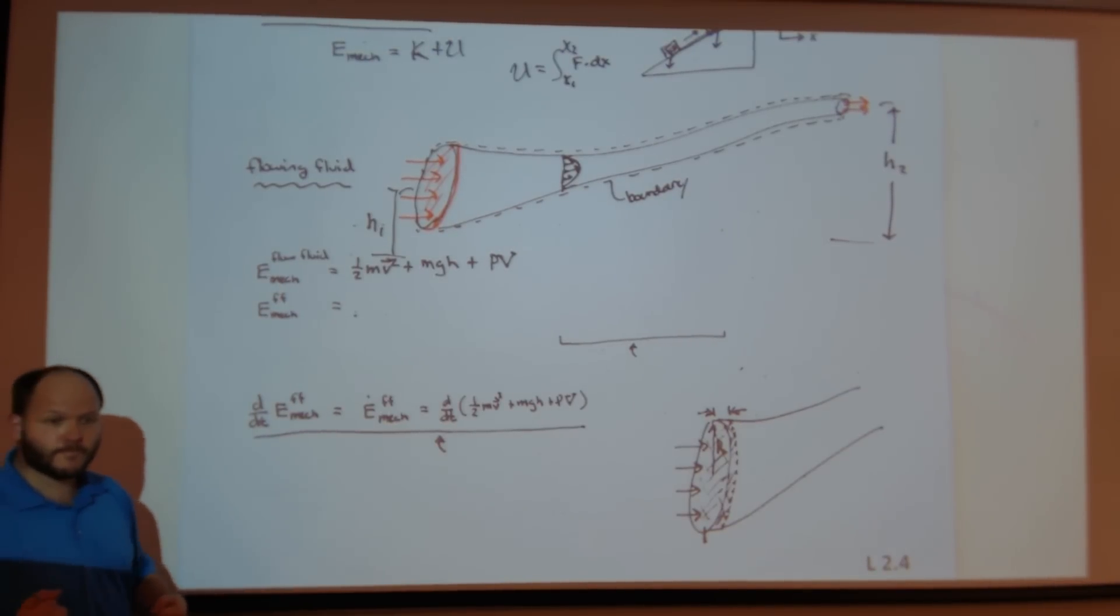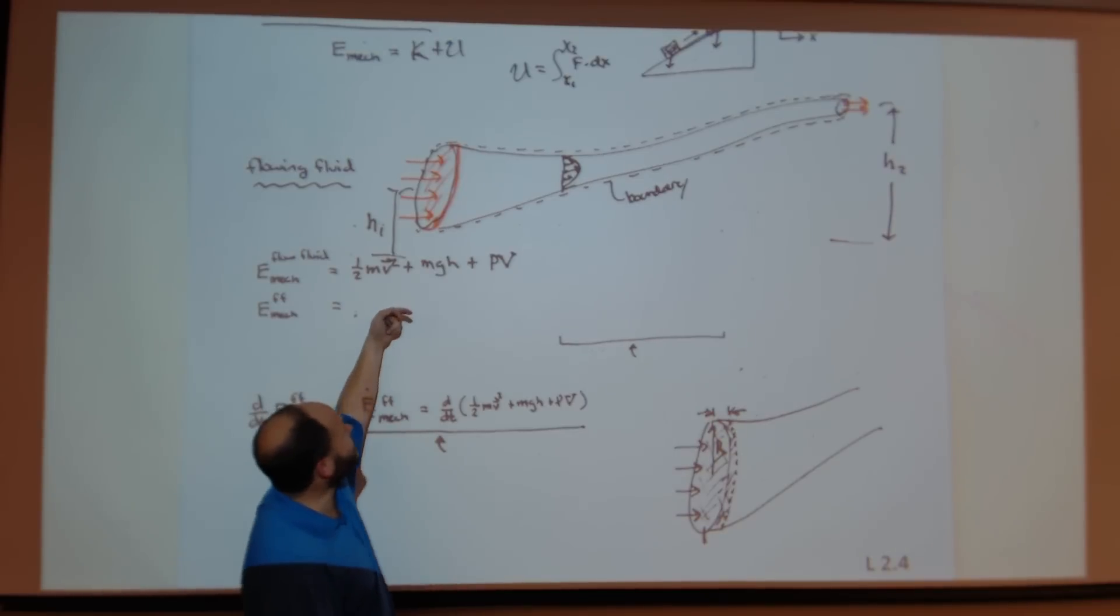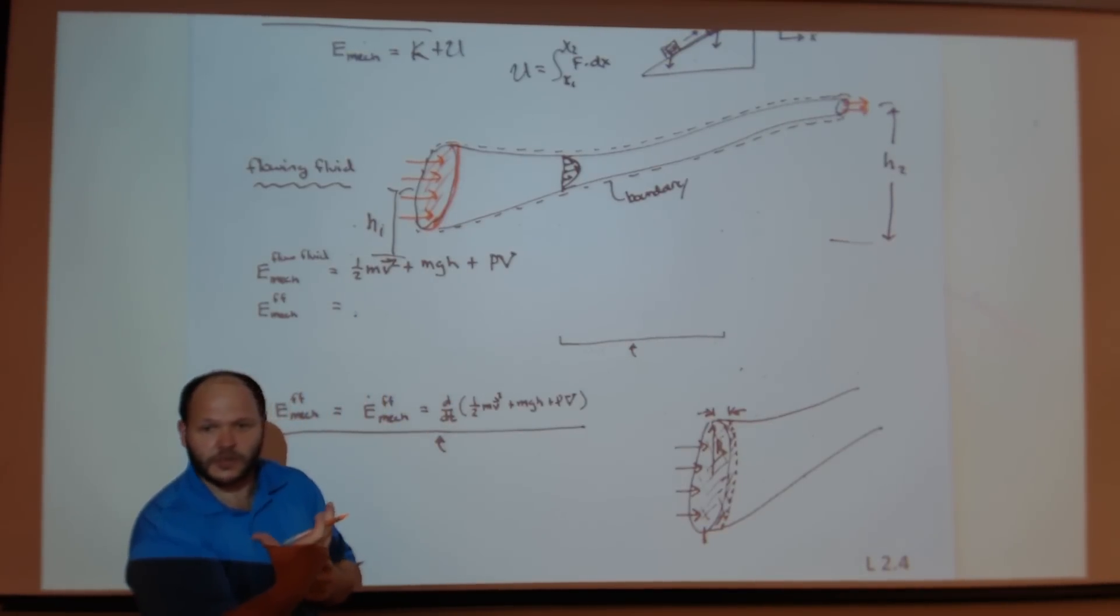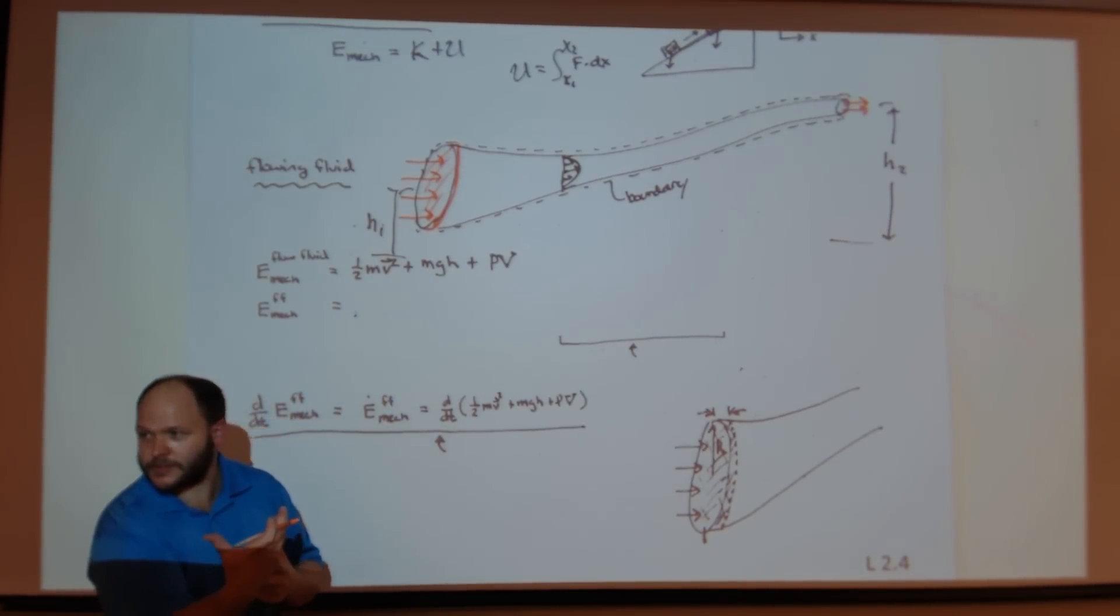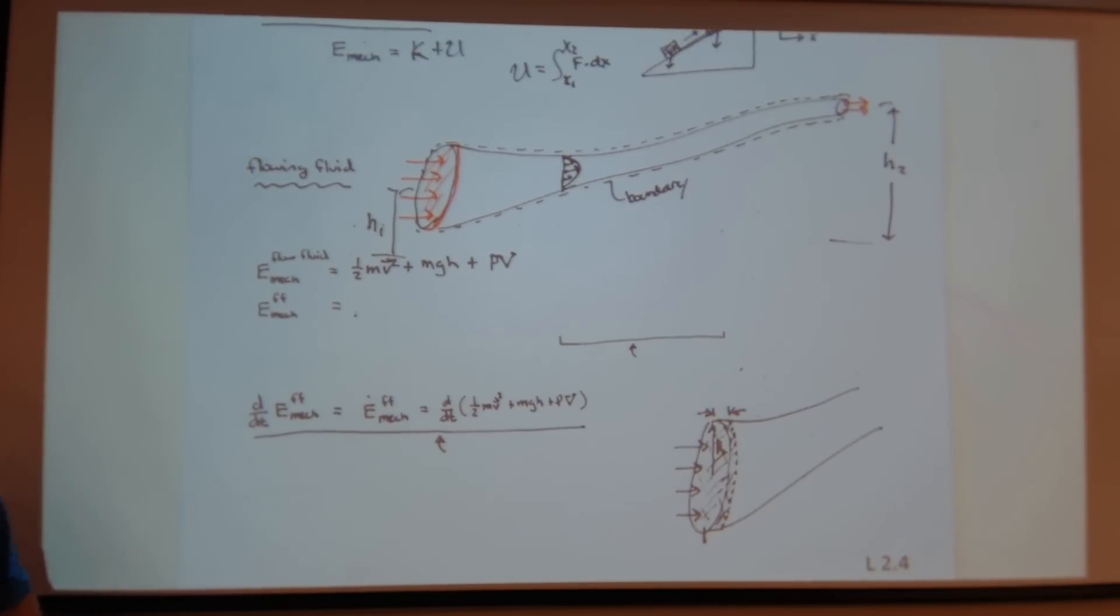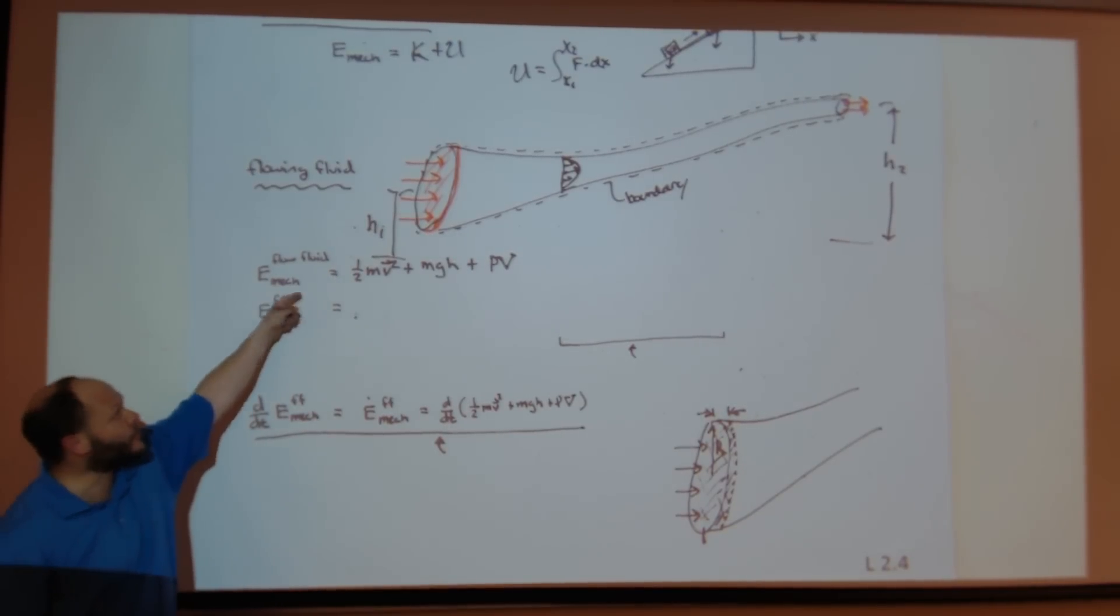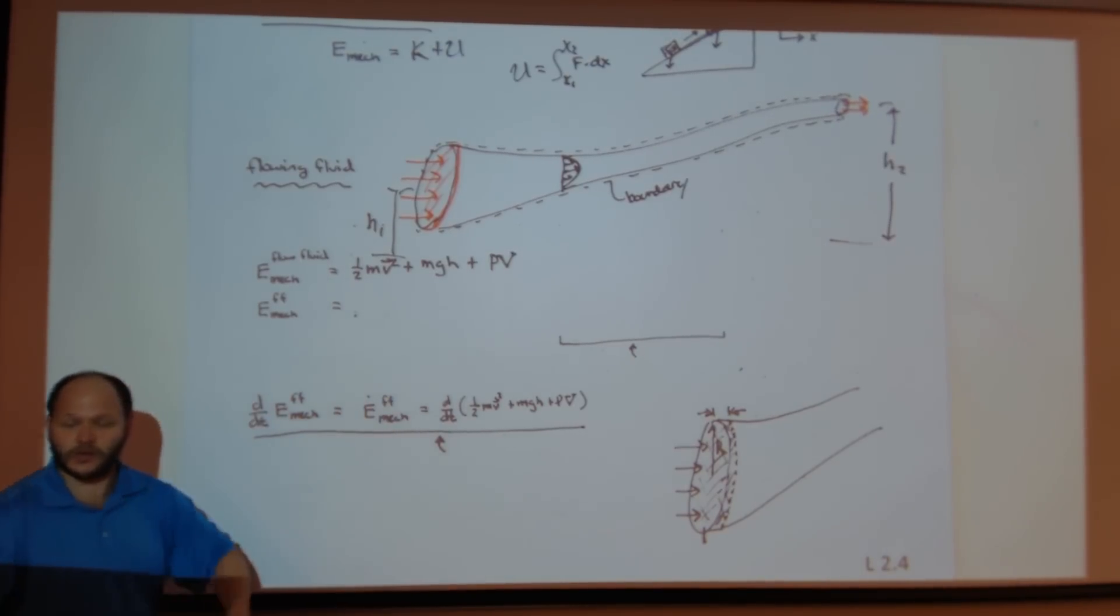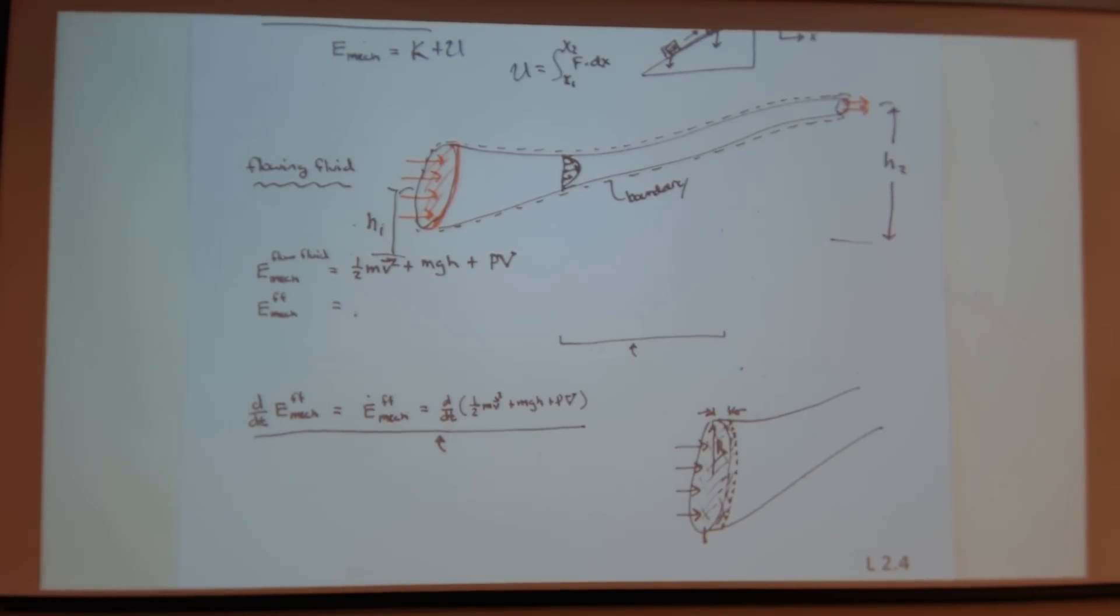So there's this potential part related to height above sea level. There's also this internal pressure part of the internal energy, or potential energy of the fluid. Then there's the kinetic part, just basically in simple terms, how fast it's flowing. So the mechanical energy associated with the flowing fluid has a kinetic potential and another potential related to how much it's pressurized.